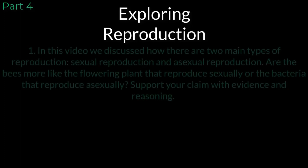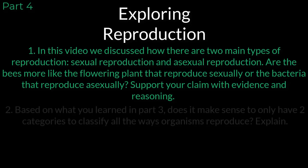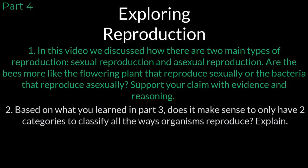In this video we explored different types of reproduction that organisms undergo to create offspring. Consider thinking about and answering these final questions as you continue your learning. Question number one: in this video we discussed how there are two main types of reproduction, sexual reproduction and asexual reproduction. Are the bees more like the flowering plants that reproduce sexually or the bacteria that reproduce asexually? Support your claim with evidence and reasoning. Question number two: based on what you learned in part three, does it make sense to only have two categories to classify all the ways organisms reproduce? Explain.